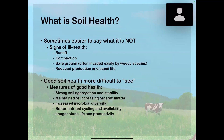Sometimes it's easier to visualize what soil health is not. Typical signs of ill health in a soil system would be runoff where we're not over-irrigating our field, compacted areas or bare ground — which often allows for the invasion of weedy species, as we've heard previously — and an observation of reduced production or stand life over what we might expect from a particular pasture planting.